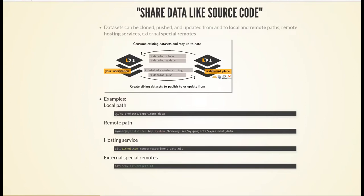A path can also be absolute, starting with a slash or a drive letter on Windows. On Unix computers, a slash identifies the very start of the file system, and you chain directories as a description of how to reach your target. If experiment-data is a DataLad dataset, then by providing such a path to the 'datalad clone' or 'datalad create-sibling' command, you can retrieve or publish the dataset as a clone to that local path.